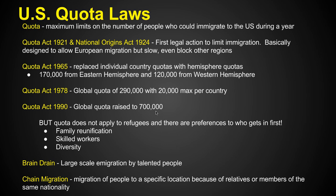This quota does not apply to refugees — as a refugee you can get in and your number does not count. There are also preferences for who gets in first. If you're applying to immigrate and you already have family in the United States, you get preference because they want to reunify your family. If you're a skilled worker, you have a much better chance of getting in because your skills could be used here. They're more likely to bring in a doctor than someone without skills.